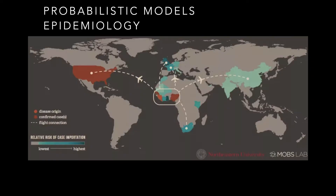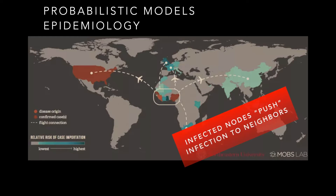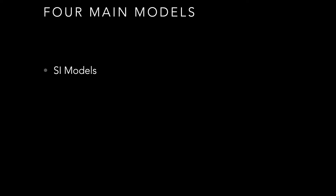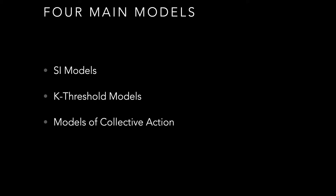When talking about cascade models, we can think about them in terms of probabilistic models around epidemiology — given COVID-19, you have a more connected feeling to this. An infected node pushes some infection to its neighbors, but the only way a particular node gets infected is if there is some edge between that node and another infected node. We'll talk about four main models: the SI model, K threshold models, models of collective action, and payoff-based models — increasingly sophisticated models.